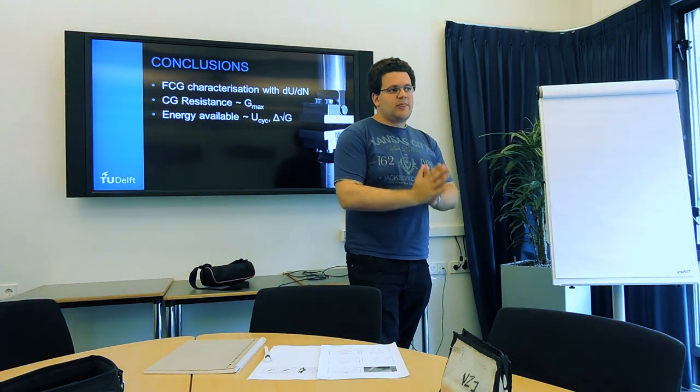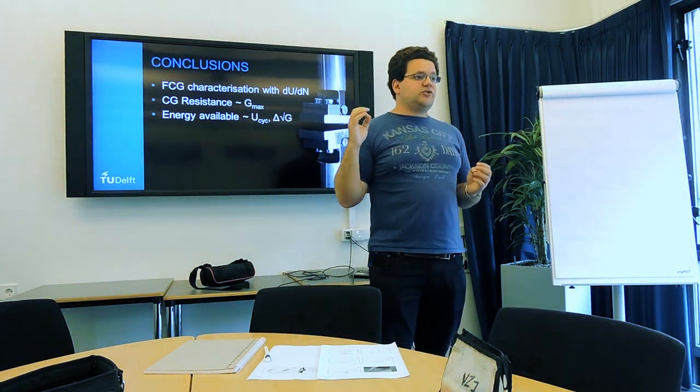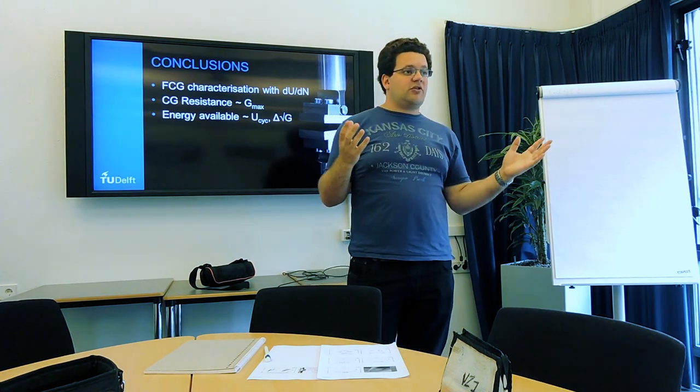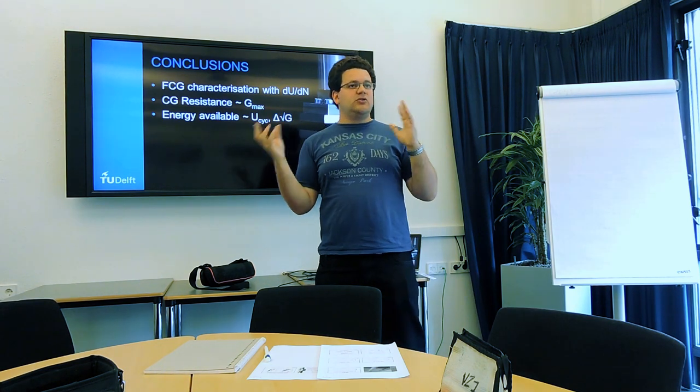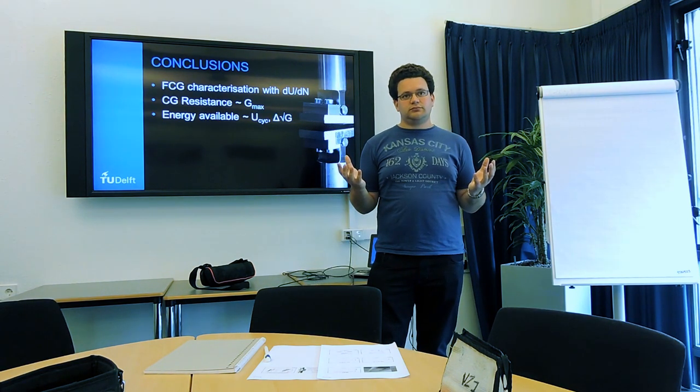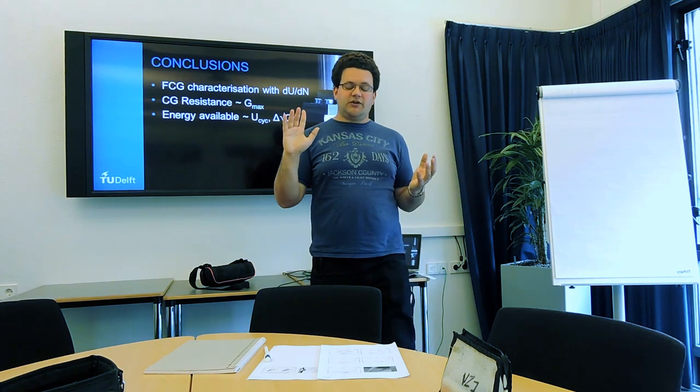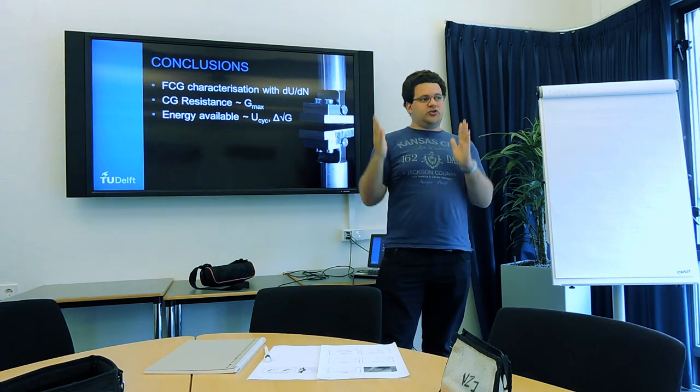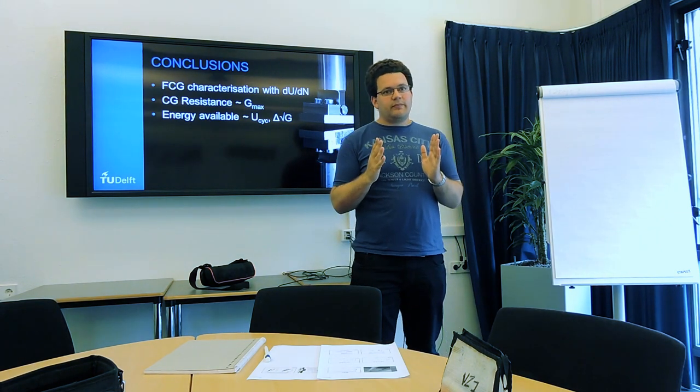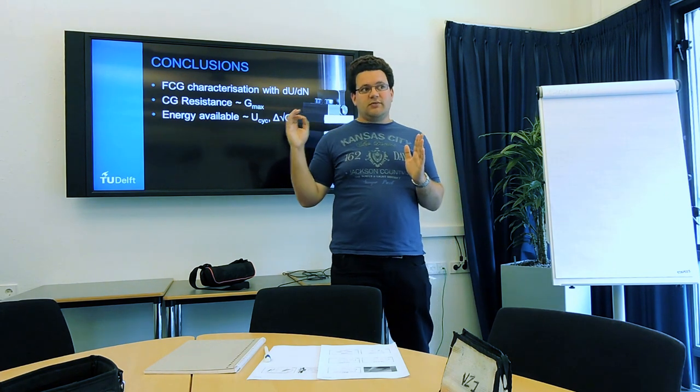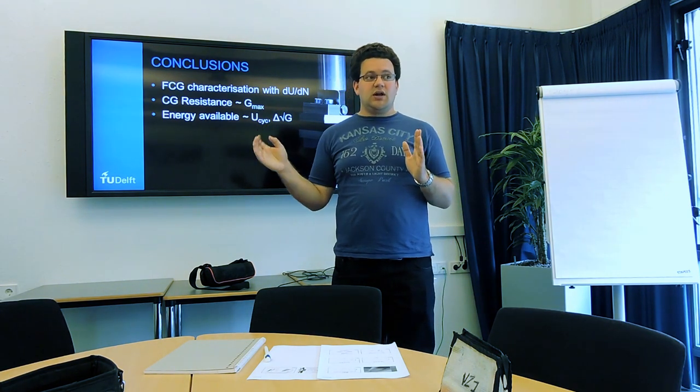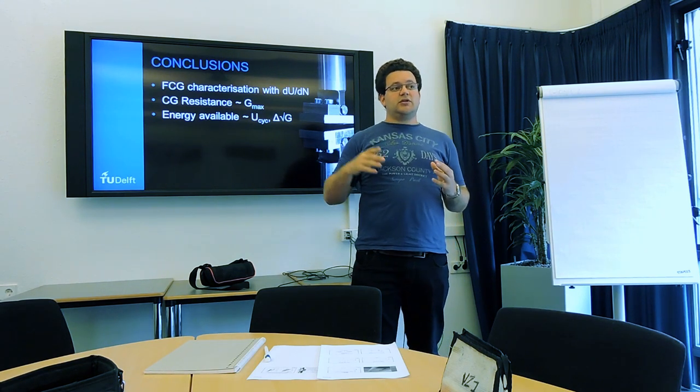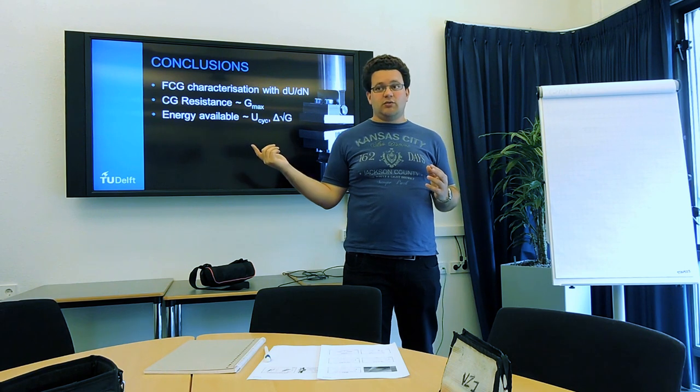So to summarize, we can characterize fatigue crack growth by means of the energy dissipation. We can measure the energy dissipation, measure the crack growth rate that matches with that, and use that to characterize what is going on in our material. Not predict, but characterize, and thereby hopefully understand. We've seen that there's a resistance to crack growth that we can quantify, and that is correlated to Gmax, the maximum energy release rate. And we've seen that the amount of energy available for crack growth can be correlated to either delta square root G, or to the cyclic work you're applying.